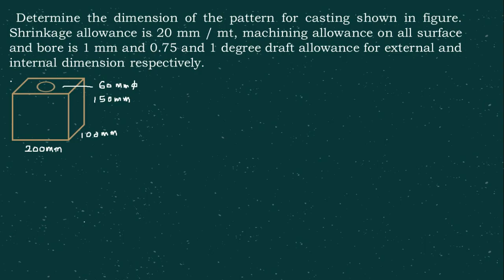Let us first consider the shrinkage allowance. The shrinkage allowance given is 20 mm per meter, meaning for every 1000 mm there is a shrinkage of 20 mm. Hence, our multiplying factor for the dimensions will become 0.02.